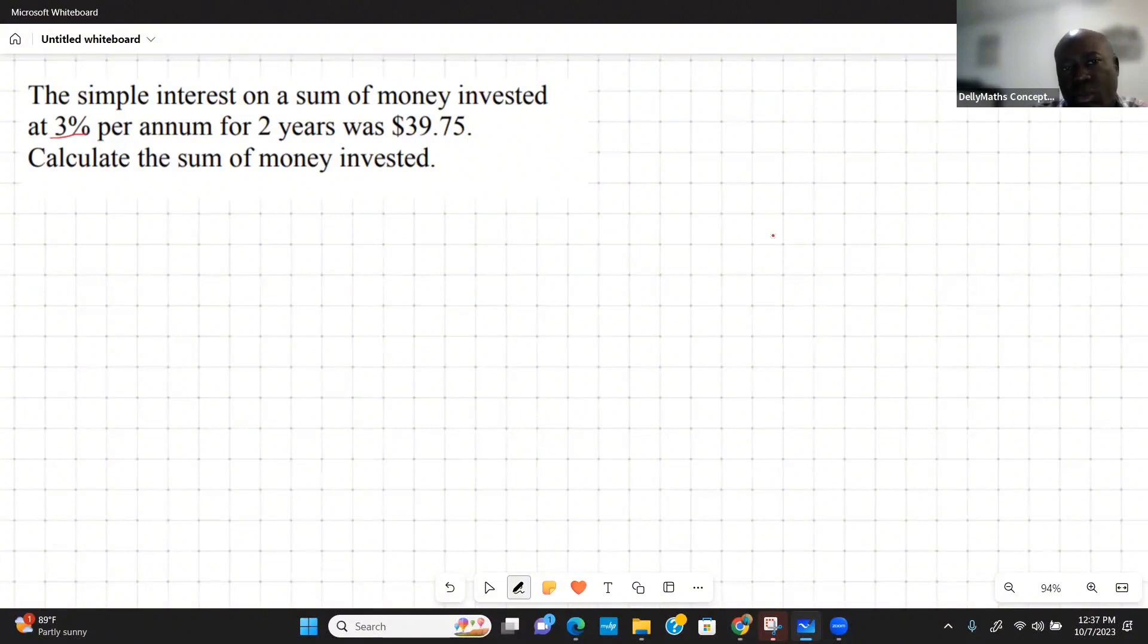The principal P is what we're in search of. We don't know it because the sum of money invested is always the principal and we refer to that as P. We have the rate which is the percentage per annum, which is 3%. We have the time which is two years. We also realize that we have the interest I, and it is $39.75.